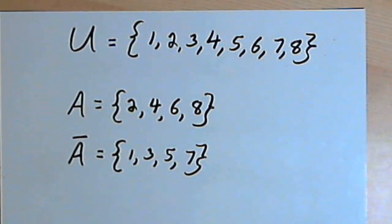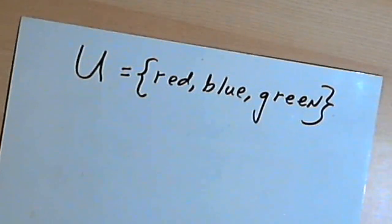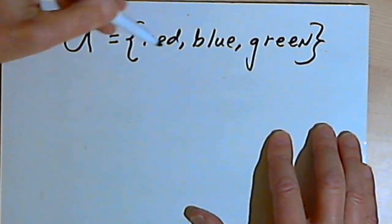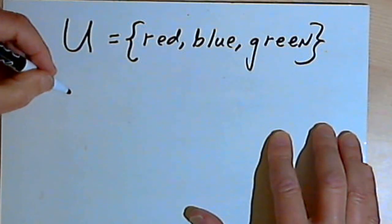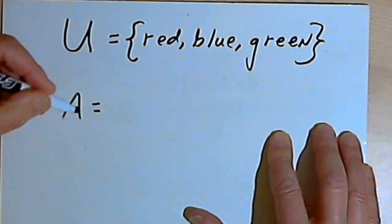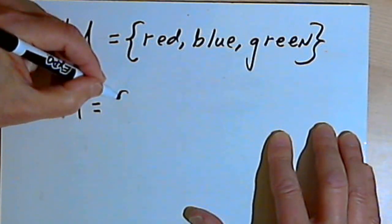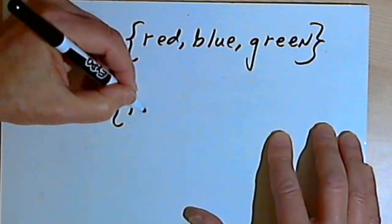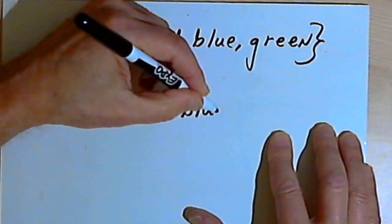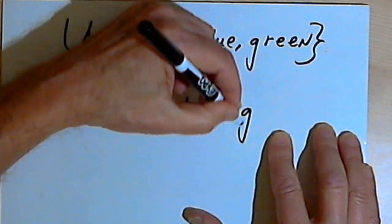And one more example. So here my universe is going to consist of the colors red, blue, and green. I can say that A... Actually, let's have A consist of red, blue, and green.